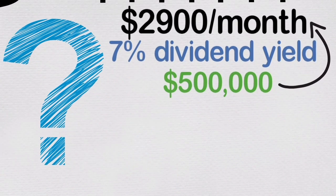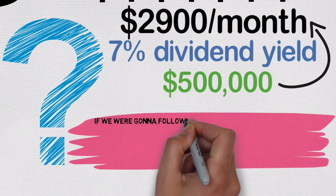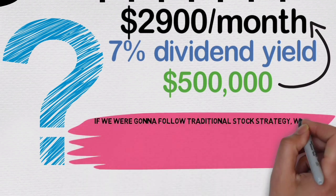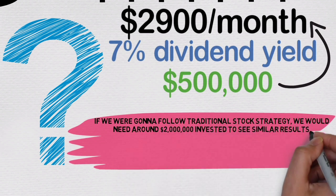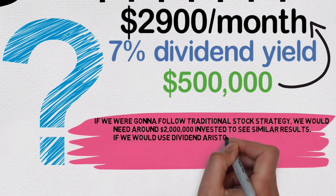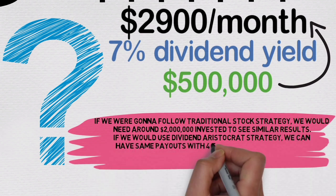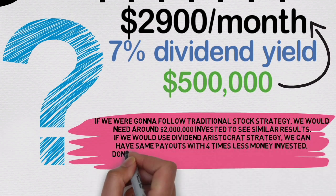This is not small sum of money by any means. However, if we were gonna follow traditional stock strategy, we would need around $2 million invested to see similar results. If we would use dividend aristocrat strategy, we can have same payouts with 4 times less money invested.